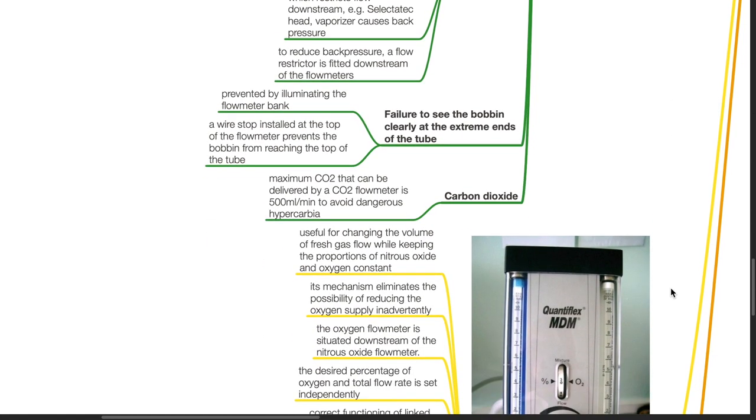Failure to see the bobbin clearly at extreme ends of the tube is prevented by illuminating the flow meter bank. A wire stop installed at the top of the flow meter prevents the bobbin from reaching the top of the tube.